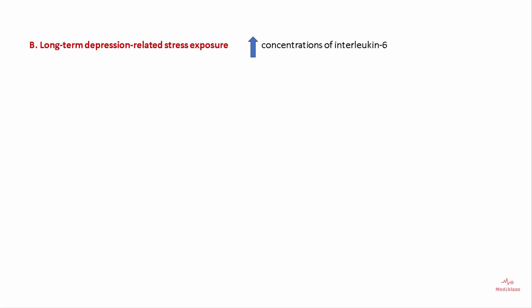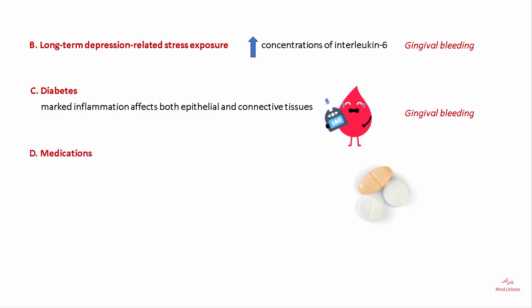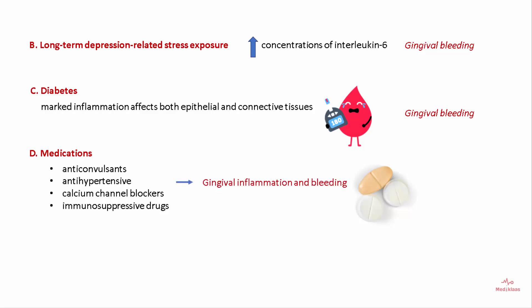Other systemic reasons include long-term depression-related stress exposure, which leads to increased concentration of interleukin-6 and increased inflammation and gingival bleeding. Diabetes is associated with marked inflammation that affects both epithelial and connective tissue cells, resulting in gingival bleeding. Medications like anticonvulsants, antihypertensive drugs, calcium channel blockers, and immunosuppressive drugs are also associated with increased inflammation and gingival bleeding.